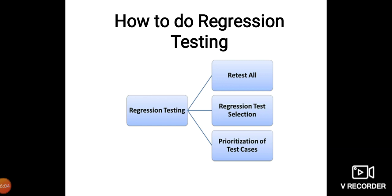Reusable test cases can be used in succeeding regression cycles, while obsolete test cases cannot be used in succeeding cycles. The last approach is 'Prioritization of Test Cases' — prioritize the test cases depending on business impact, critical and frequently used functionalities. Selection of test cases based on priority will greatly reduce the regression test suite.